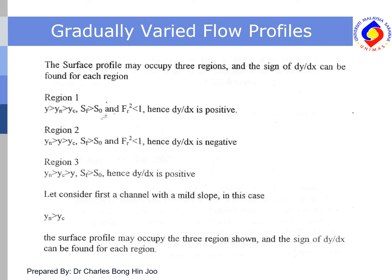For Region 2, the normal depth is larger than the flow depth, and the flow depth is larger than the critical depth. The energy line slope is larger than the channel bottom slope and the Froude number squared is less than 1; hence dy/dx is negative. For Region 3, the normal depth is larger than the critical depth, and the critical depth is larger than the flow depth. The energy line slope is larger than the channel bottom slope; hence dy/dx is positive.